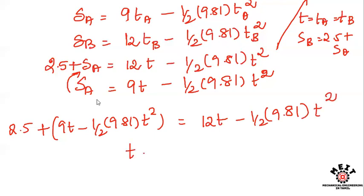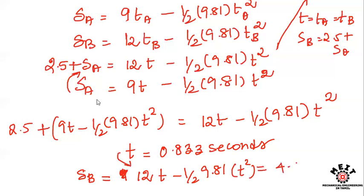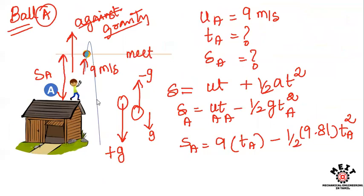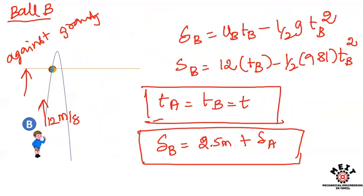Solving this equation, we find t equals 0.833 seconds. To find the meeting height, we calculate SB: SB = 12 × t − ½ × 9.81 × t², substituting the t value gives SB = 4.093 meters. This is how we solve the problem by incorporating two motions using the equation of motion S = ut + ½at², using unknown distance and unknown time. Thank you.